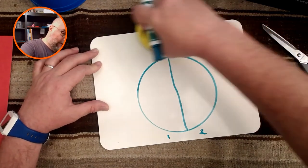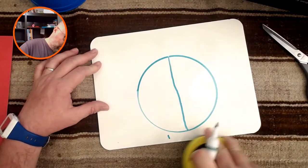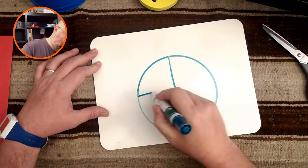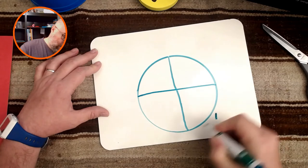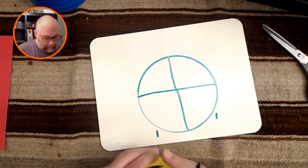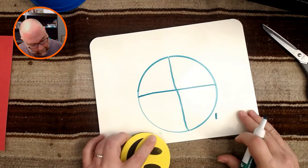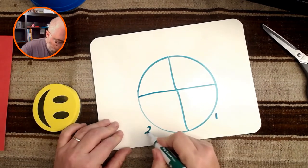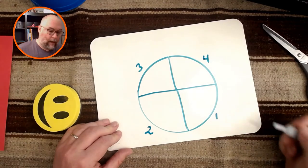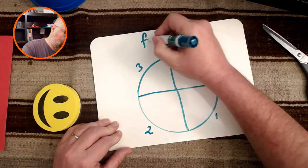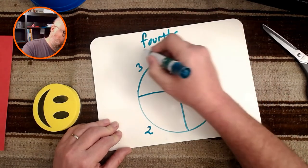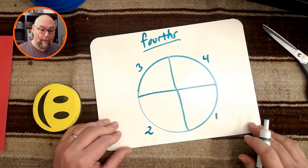Now I can take that same shape and I can cut that into half also. Now I've got one, two, halves, two, three, four. I now have fourths. Fourths.